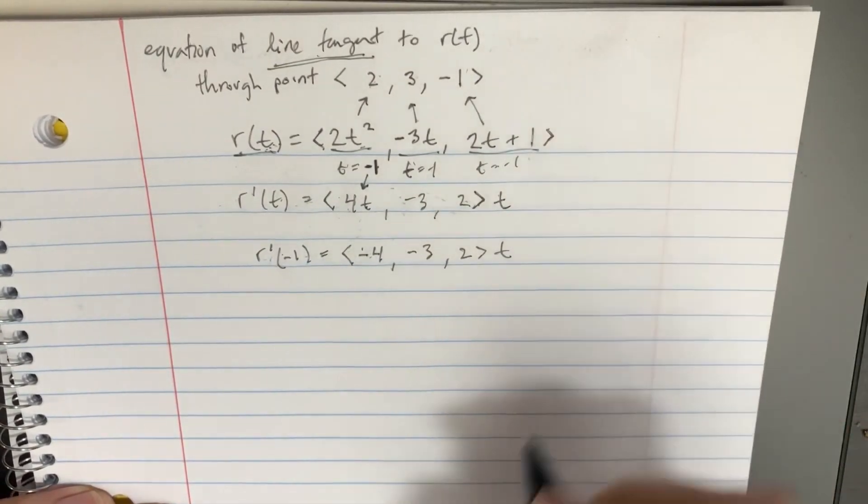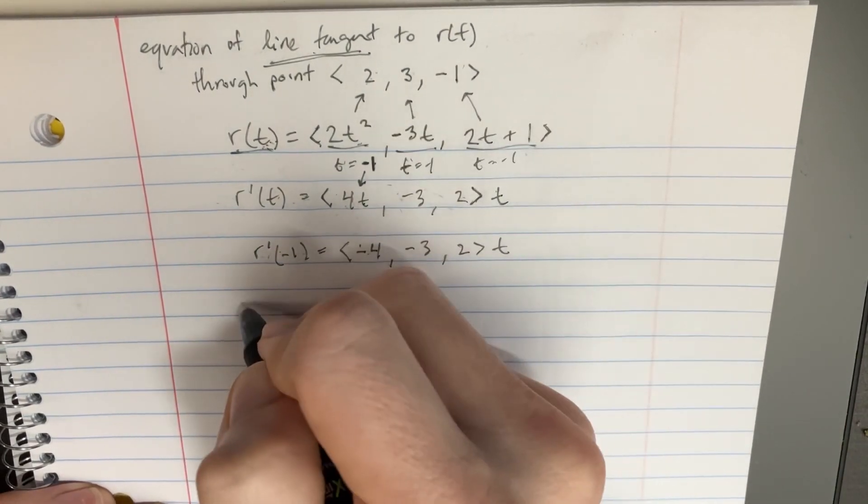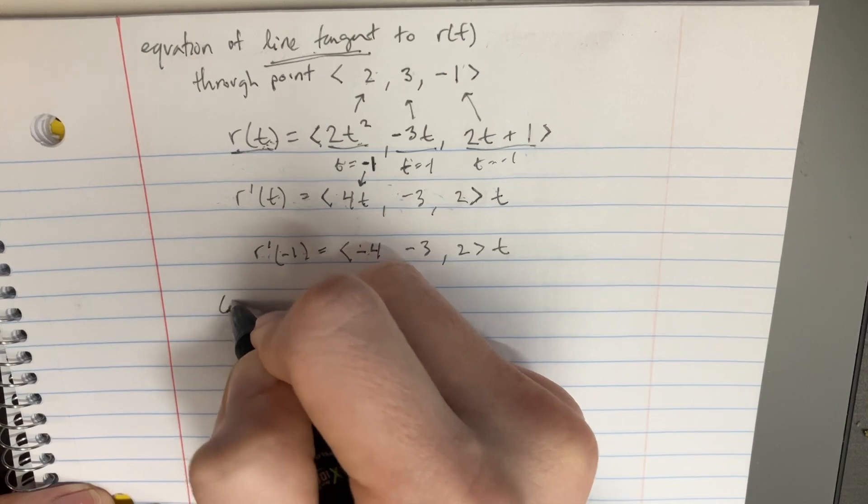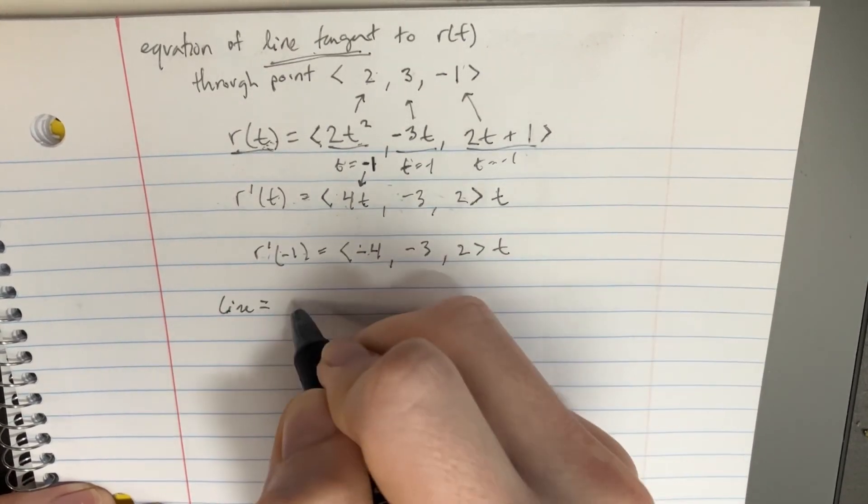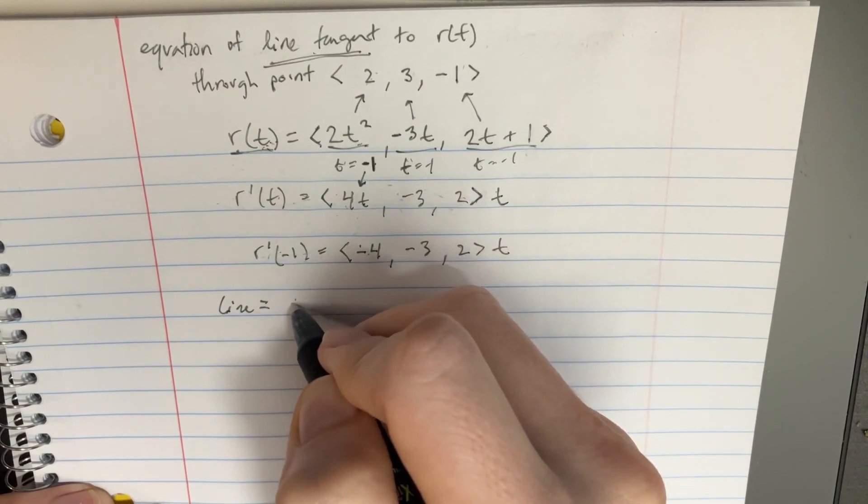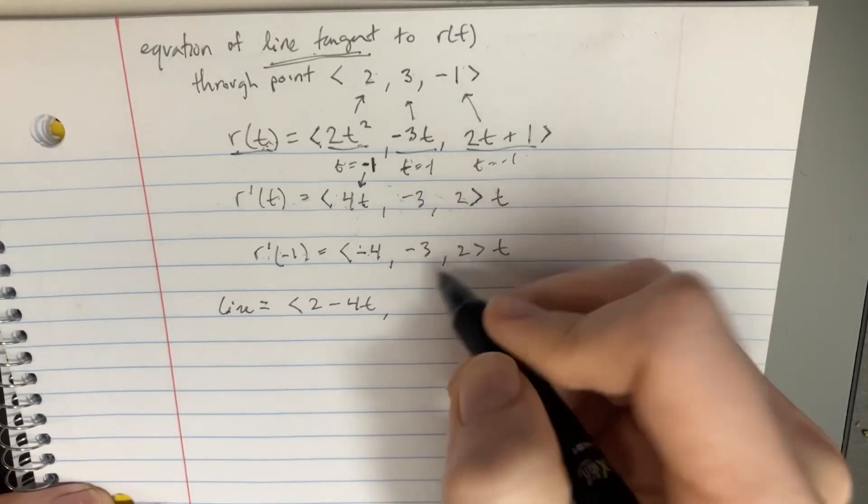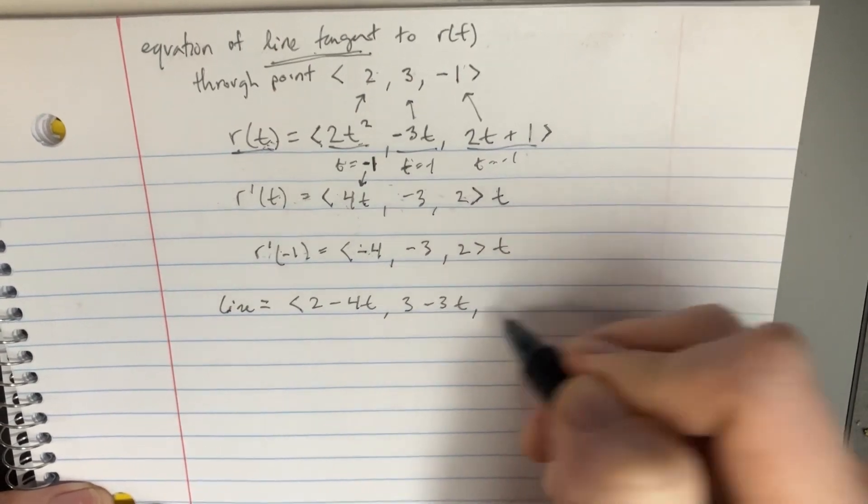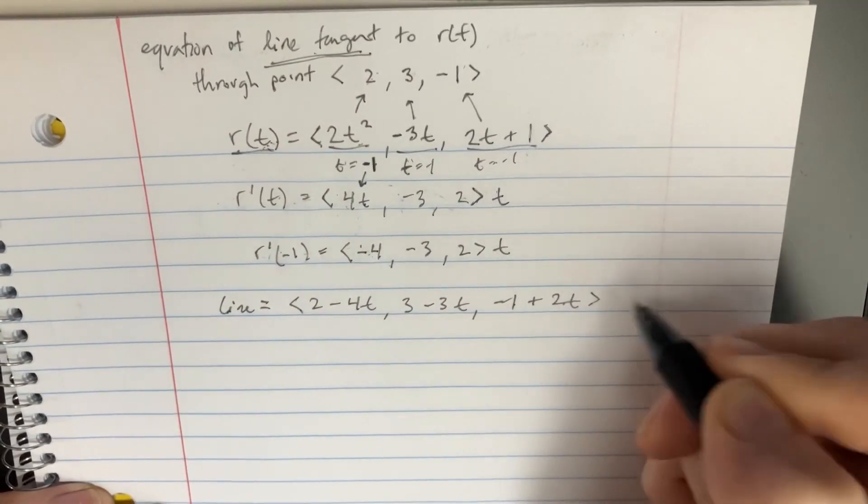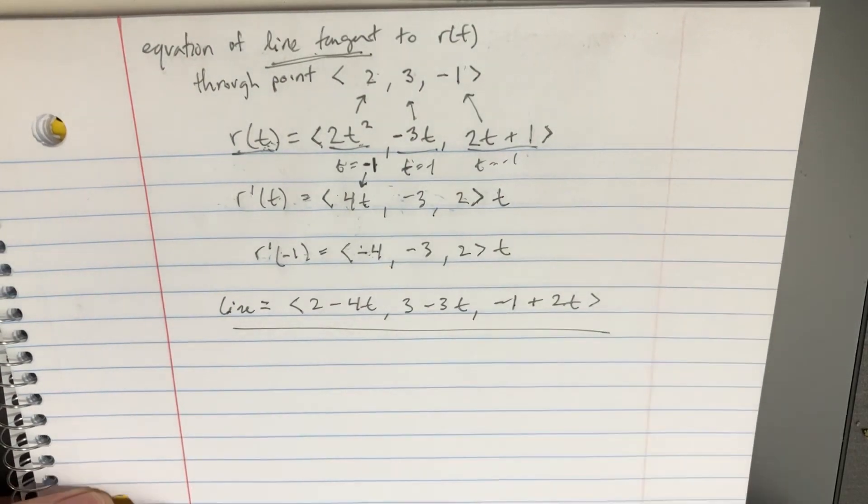But now we just have a regular t value here. And now we can use that point. So we could say that the equation of the line is, we could say, 2 minus 4t and then 3 minus 3t and then negative 1 plus 2t. And that's going to be the equation of the line. Interesting.